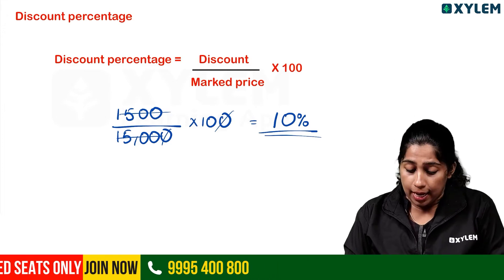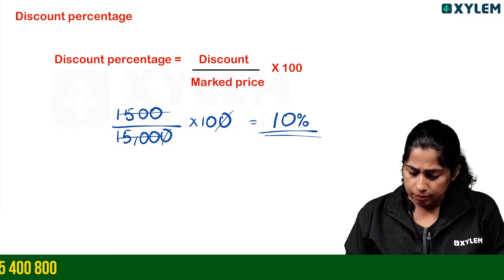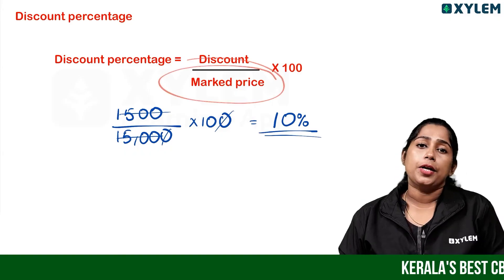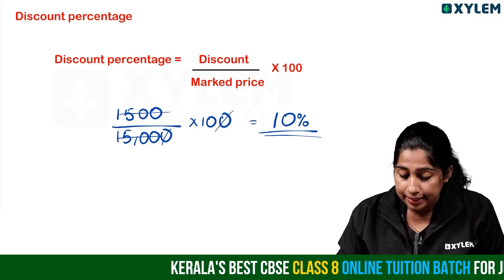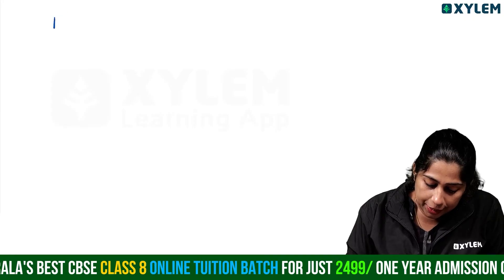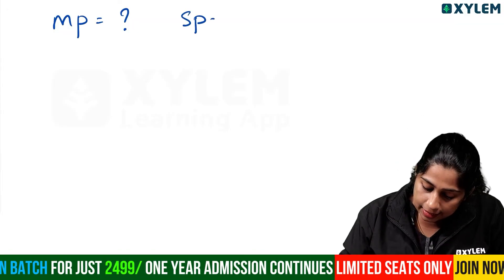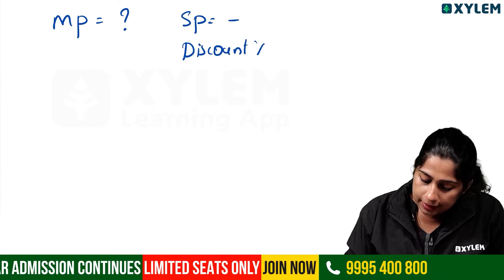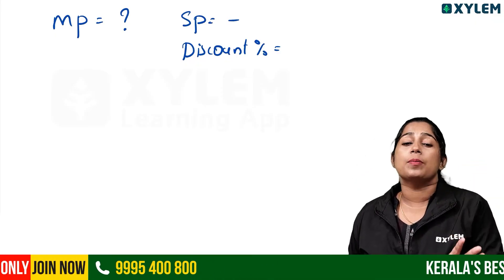In the question paper, sometimes they give you the discount percentage and the selling price, and ask you to find the marked price. If the selling price is given and the discount percentage is given, we need to find the marked price.